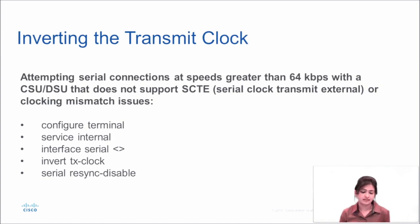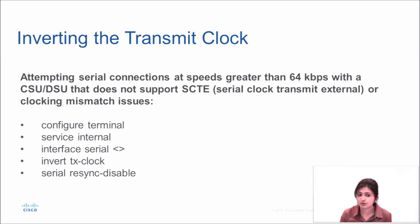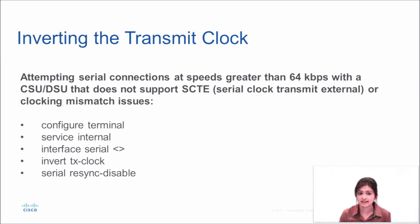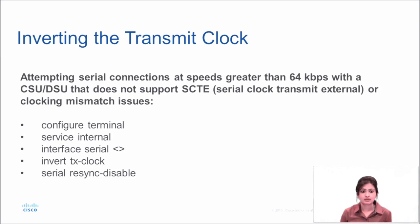Regarding inverting the transmit clock: sometimes if you are attempting serial connections at speeds greater than 64 kbps with a CSU/DSU that does not support SCTE (serial clock transmit external), or in cases of clocking mismatch issues, you can configure these simple steps to resolve this. Just configure the command 'invert tx-clock' and 'serial resync disable' under the serial interface, and the clocking mismatch issue will be resolved.